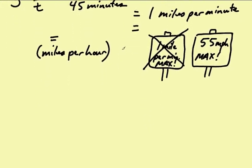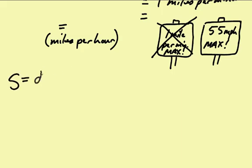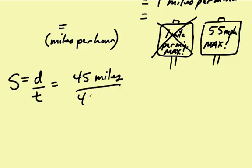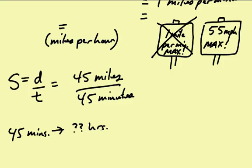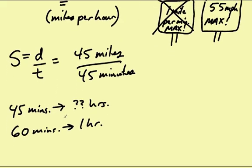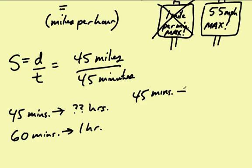I'll rewrite the speed equation: S is equal to D over T, speed is equal to distance divided by time. We'll put those numbers back in - it was 45 miles every 45 minutes. But I want to change the 45 minutes into hours, a certain amount of hours. If I know that 60 minutes is one hour, then 45 minutes should be a certain fraction of an hour.